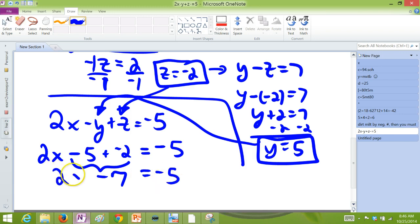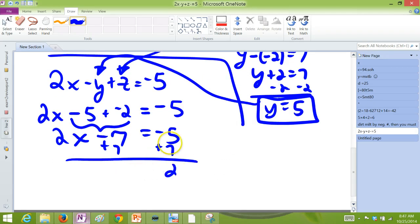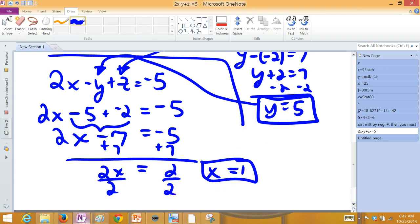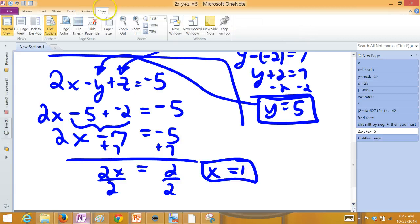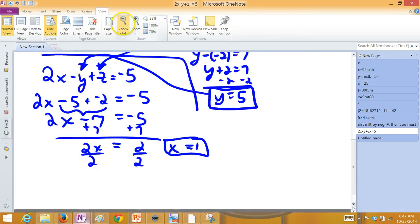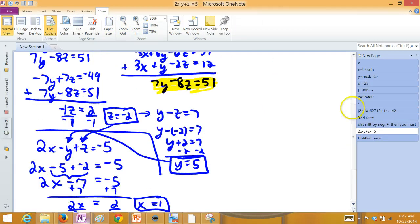Leaving everything else alone, if we add that 7 over, we get a positive 2. And that's what 2x should equal. So divide by 2. And we have it. x should be equal to 1. We just solved three equations and three unknowns all at the same time. Good job.